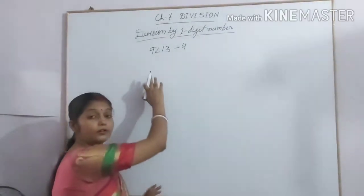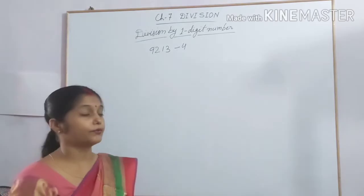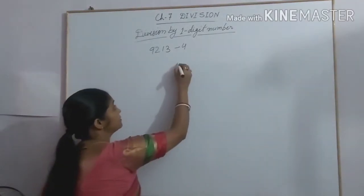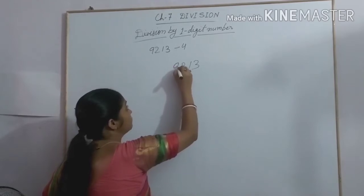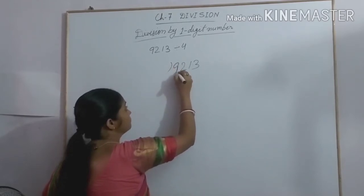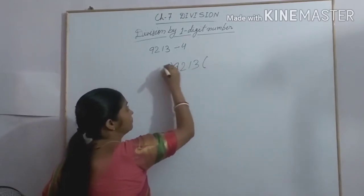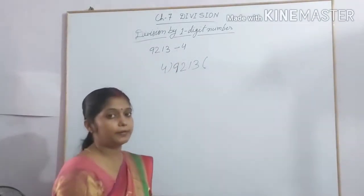The question is 9230 divided by 4. We have to divide 9213 by 4 and find the quotient and remainder.